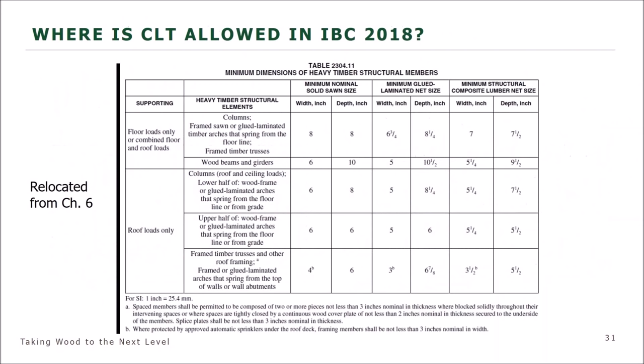There are minimum sizes that heavy timber structural members must meet. Previously this table was in Chapter 6, but since engineers don't always go to Chapter 6, it's been moved to Chapter 23 with the wood chapter. The table has been expanded to be more descriptive — the new table provides what the element is supporting, parameters for load conditions, and then the actual heavy timber structural elements. Chapter 23 also has specific information related to minimum thickness of cross-laminated timber panels for solid-sawn lumber, glue-laminated timber, and structural composite lumber.